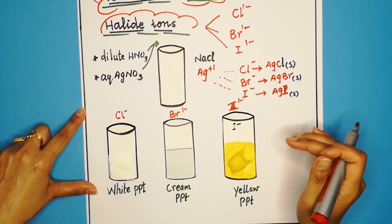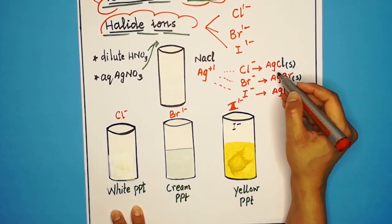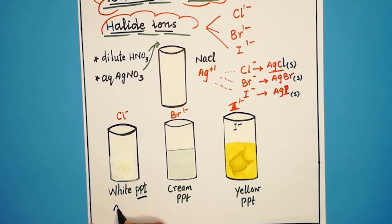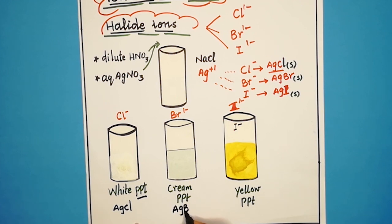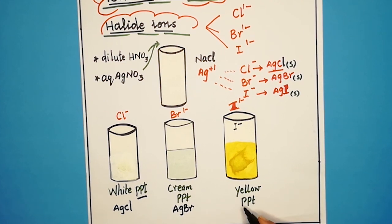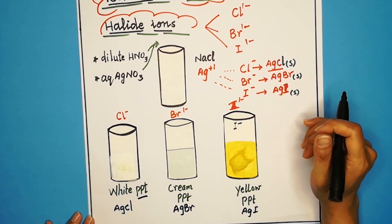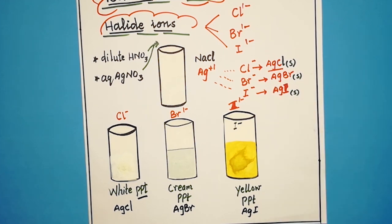Chemically, the white precipitate is AgCl (silver chloride). The cream precipitate is AgBr (silver bromide), because the silver halides are insoluble. And silver iodide, AgI, gives a yellow precipitate. These are the tests for halide ions.